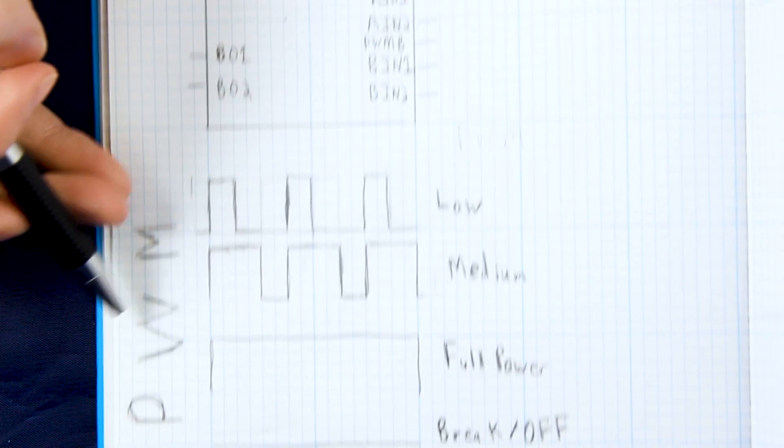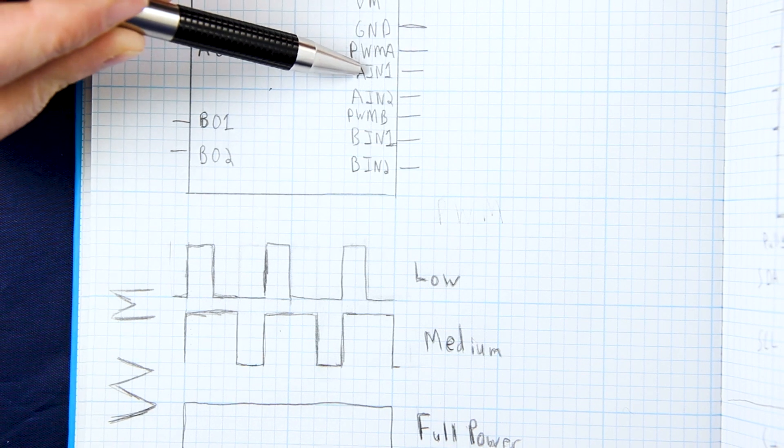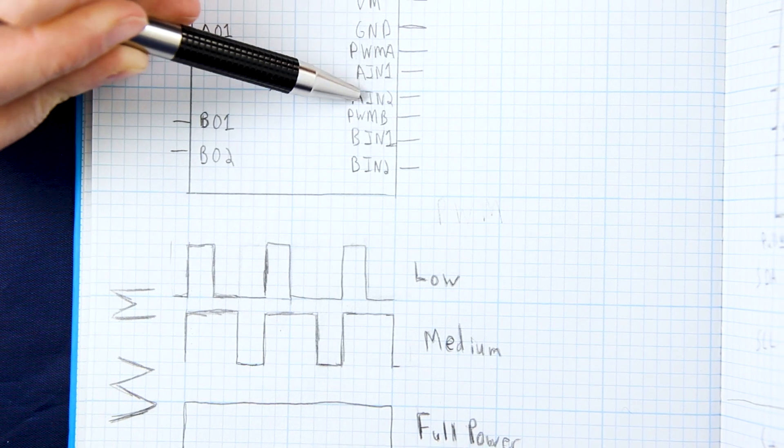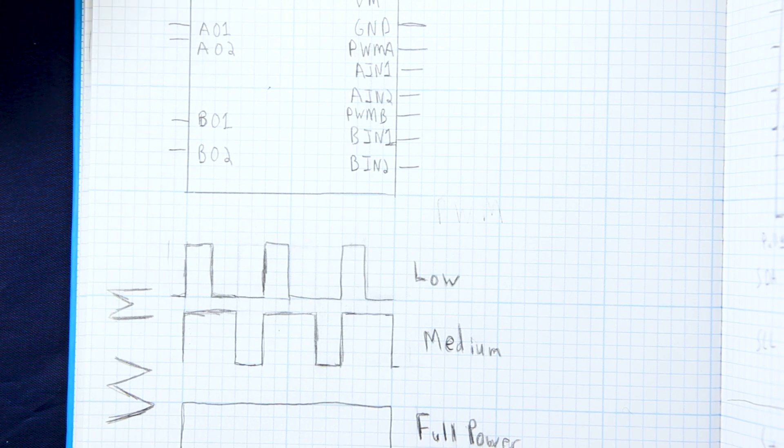So when we're going back up to our diagram right here these are the outs right here. So we decide if this is high or if this one is high and that's going to decide the direction over here on our outputs.